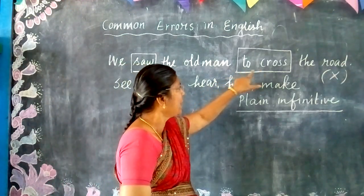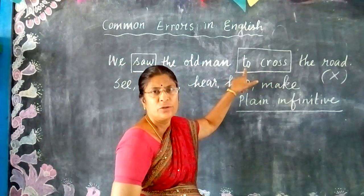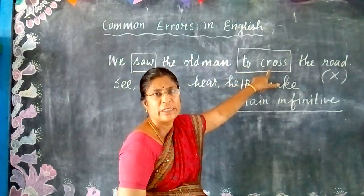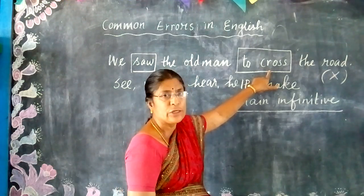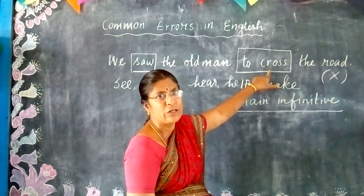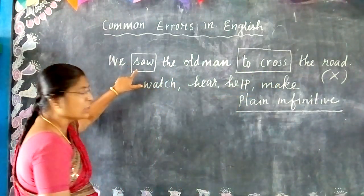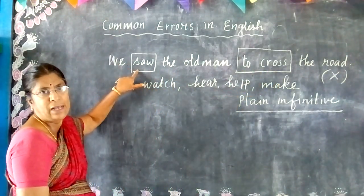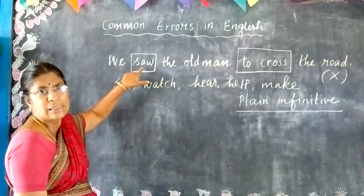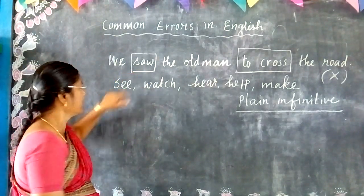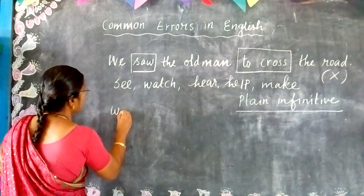Here, 'to' plus verb makes it a to-infinitive verb. You should not use a to-infinitive after 'saw'. 'See' is in present tense; 'saw' is in past tense.